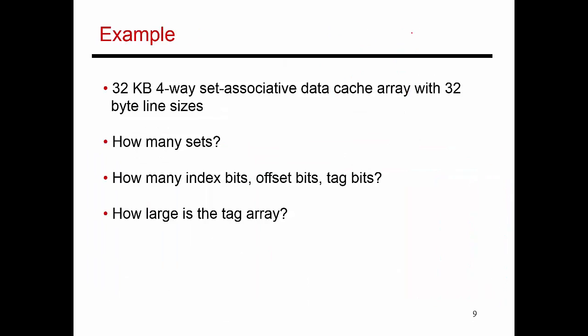Let's do one more example. Here I have a 32 kilobyte cache. The cache is four-way set associative, and every block or every line is 32 bytes in size.